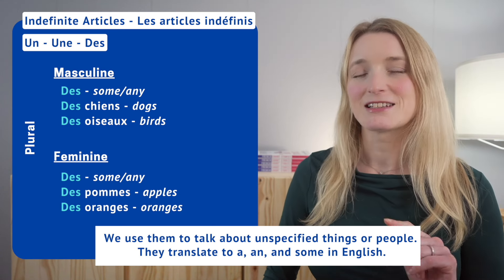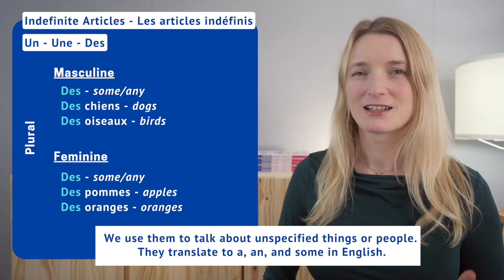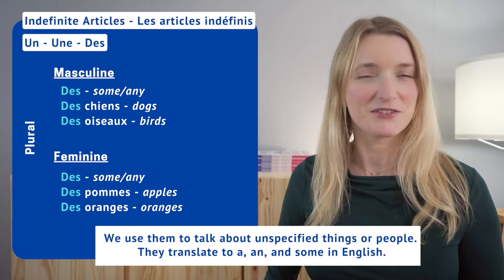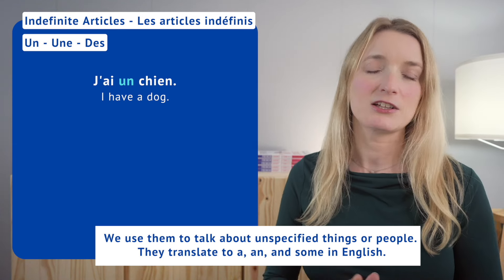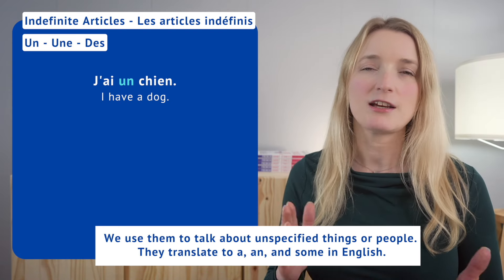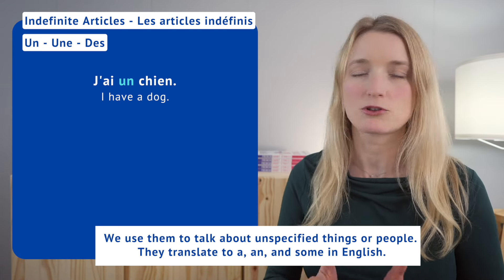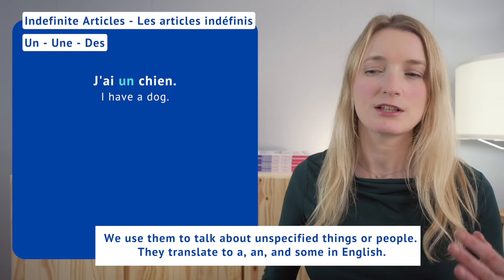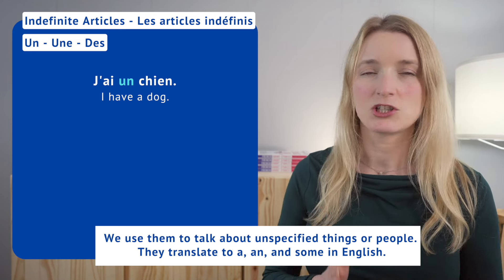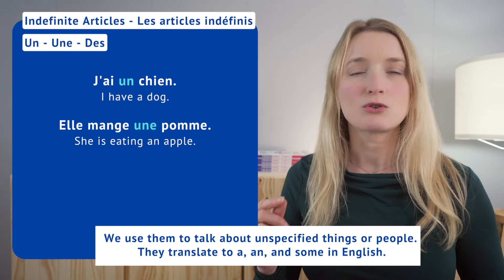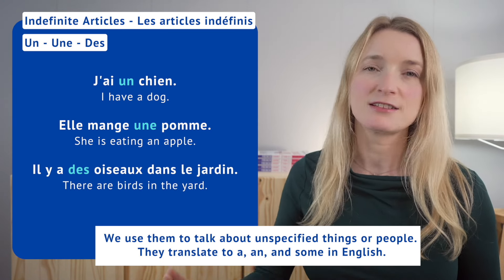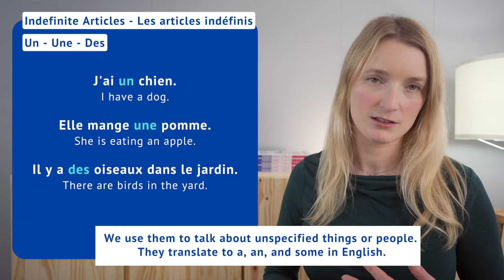Now let's see a couple of example sentences. J'ai un chien — 'I have a dog.' Here there's not too much to say; they are used in a very similar way to English — the easiest to start with. Elle mange une pomme. Il y a des oiseaux dans le jardin.